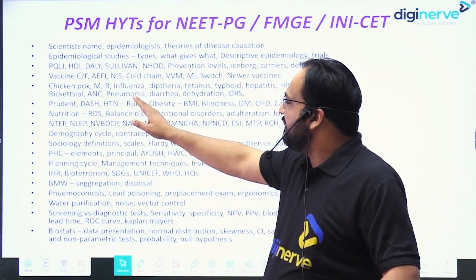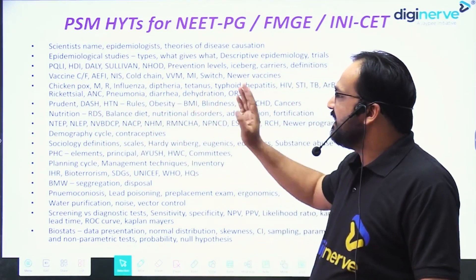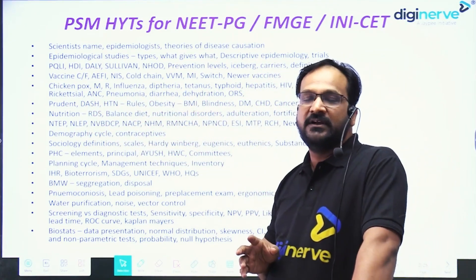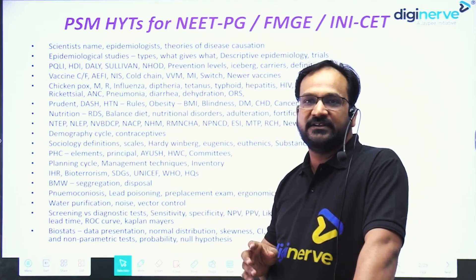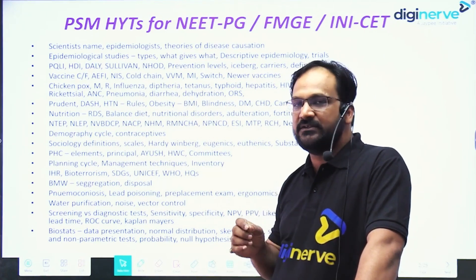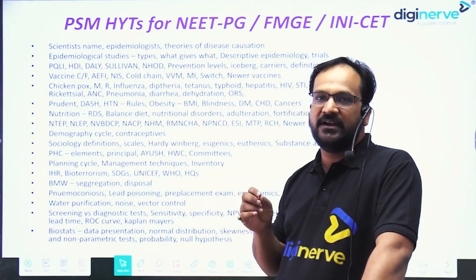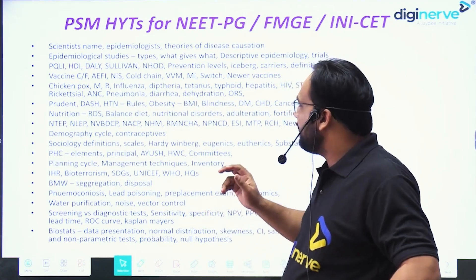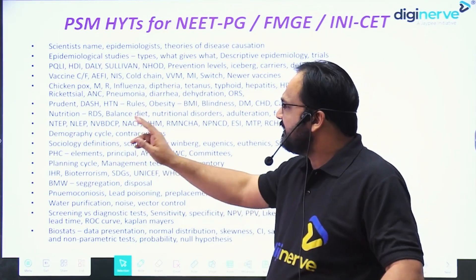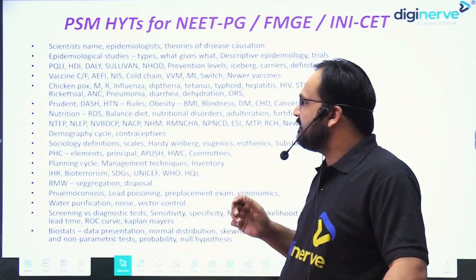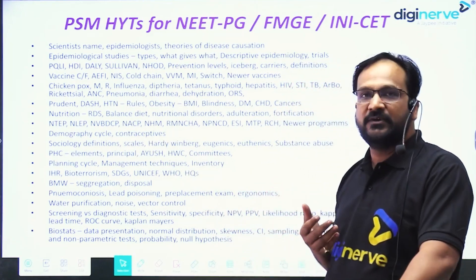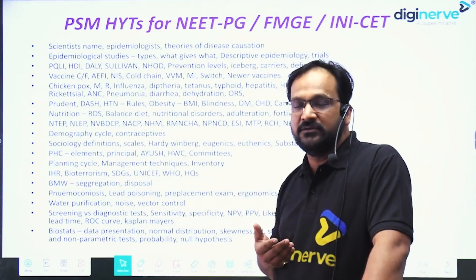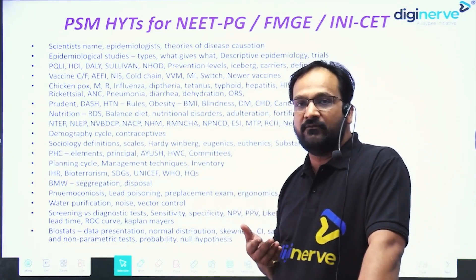Important diseases include chickenpox, MR, influenza, and diphtheria. The vectors of rickettsia are important. Pneumonia, diarrhea, and dehydration cases are very important for the examination — they give you case scenarios on pneumonia, dehydration, and diarrhea.